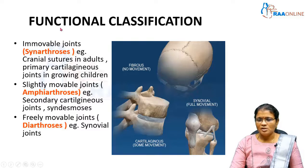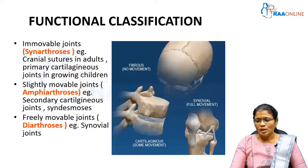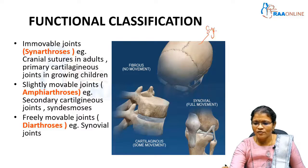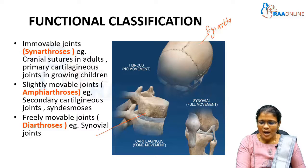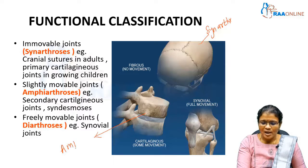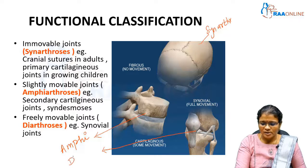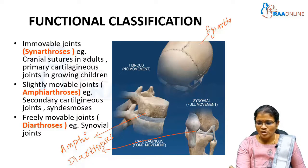Functional classification is based on function — whether mobility is present or not. There are three types in functional classification. The first is synarthrosis, which is an immobile joint. Examples of synarthrosis are present in skull bones. The second type is diarthrosis, where the joints are freely mobile and present in most synovial joints.